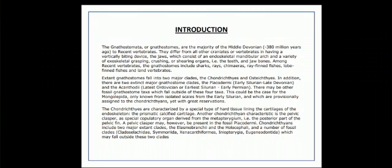The early groups of Gnathostomans were divided into two subgroups, i.e. the Acanthodii and the Placodermi.